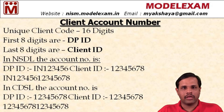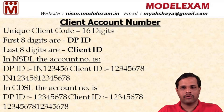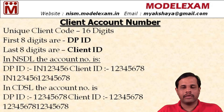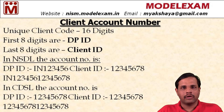In case of CDSL, the account number starts straight away with a number — there is no IN here. That is the only difference. In CDSL, the DPID is 8 digits and the client ID is also 8 digits. Both put together form the unique client account number in the depository system, totally 16 digits.